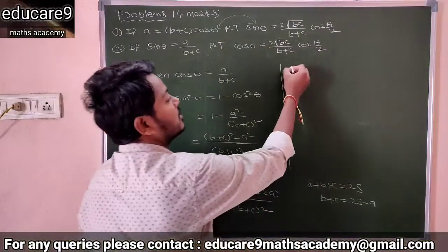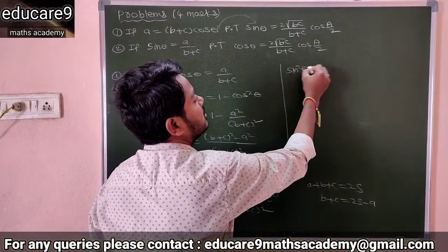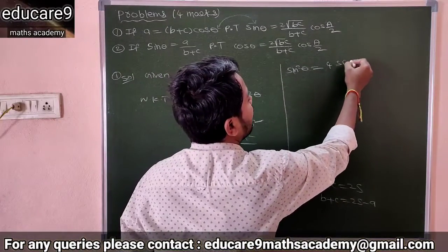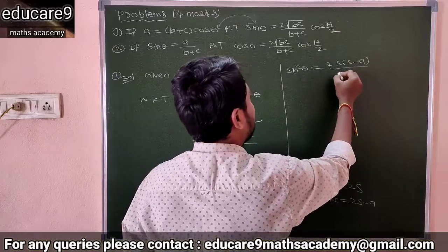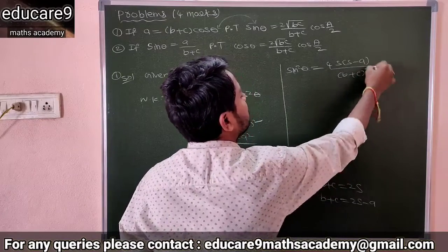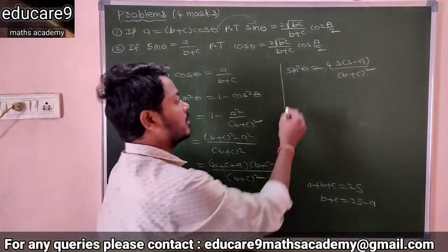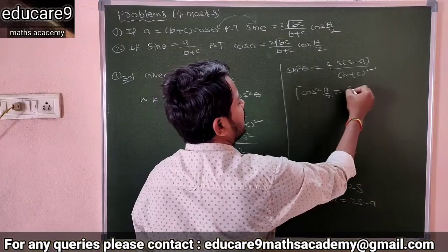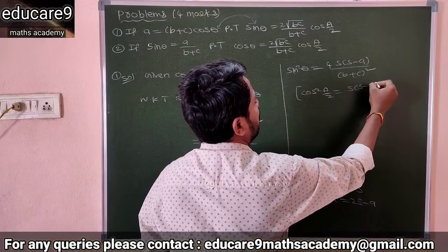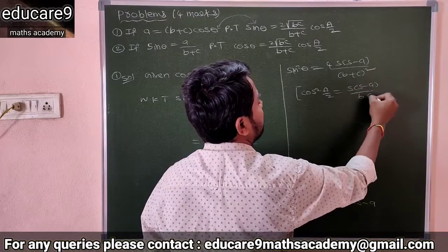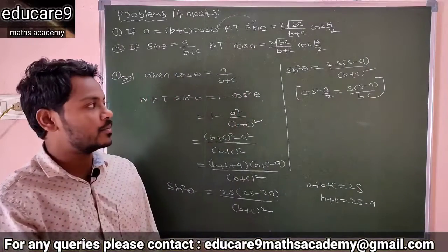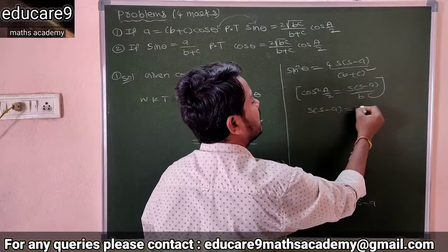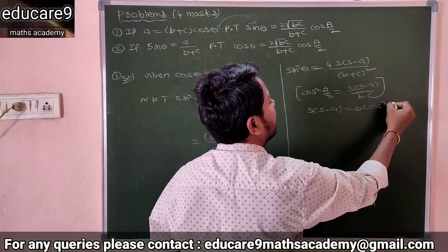So sin²θ equals 2s into (2s minus a) divided by (b+c)². Here 2 is common, so you get 4·s·(s-a) divided by (b+c)². You know that the cos²(A/2) formula: that is s(s-a)/(bc). This is cos²(A/2).